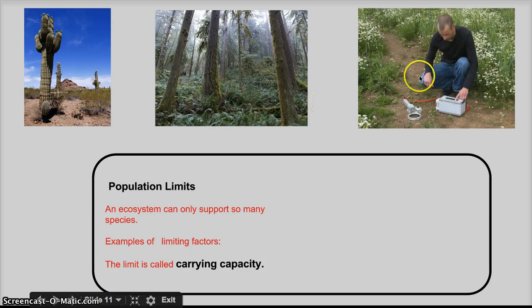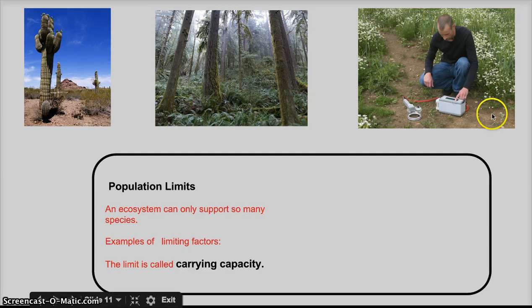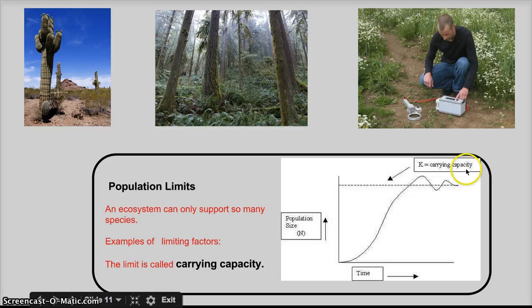Another limiting factor is harder to see, but it's the nutrients or type of soil. Wetlands have a type of soil that stays wet throughout most of the year. Some soils being sandy and well-drained will support other species. So all of these limiting factors create a carrying capacity or kind of a total number of different species that an ecosystem can support.